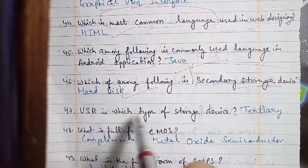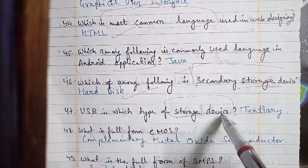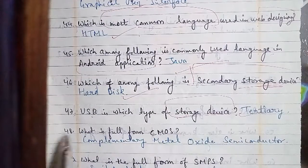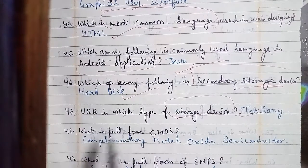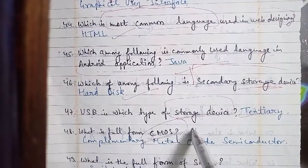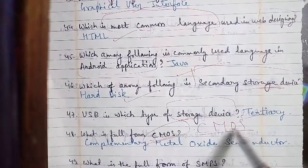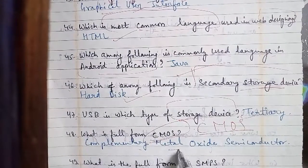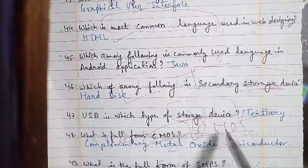Question number 48: what is the full form of CMOS in computers? The full form of CMOS is Complementary Metal Oxide Semiconductor — C stands for Complementary, M stands for Metal, O stands for Oxide, and S stands for Semiconductor.